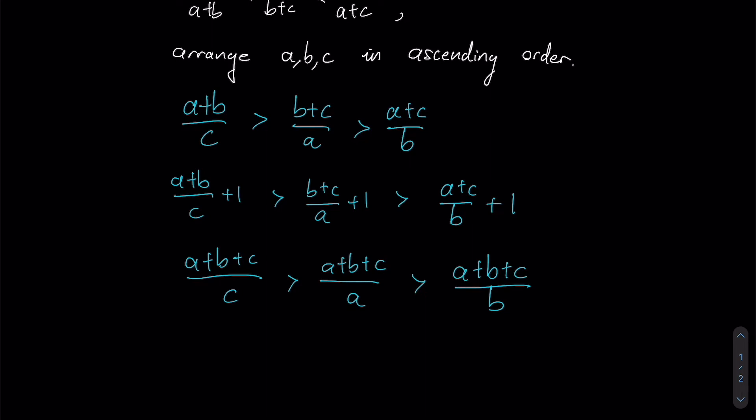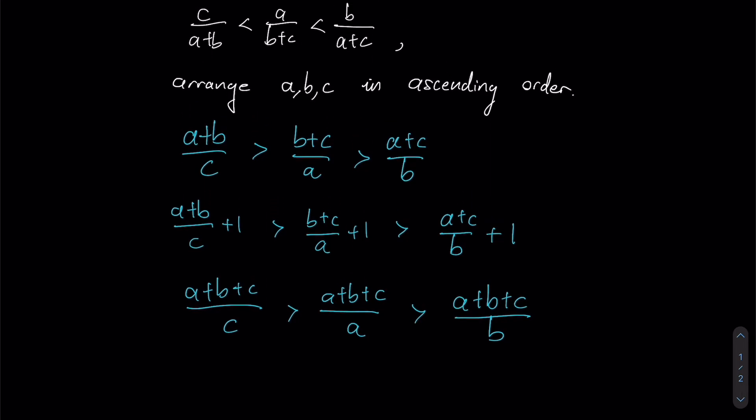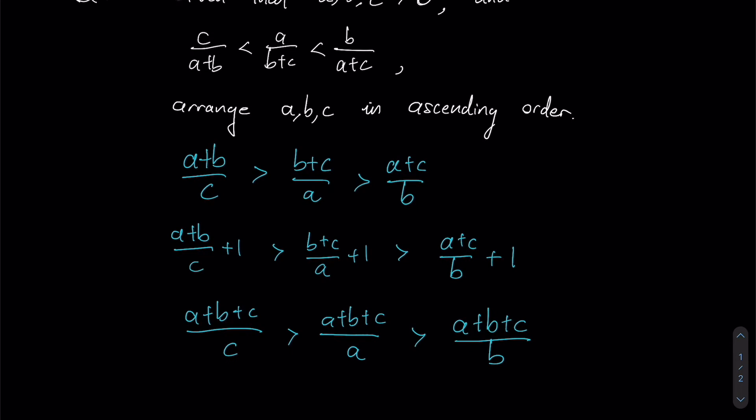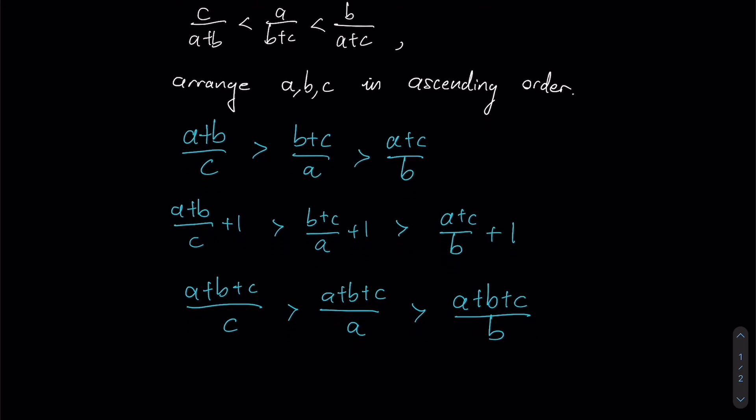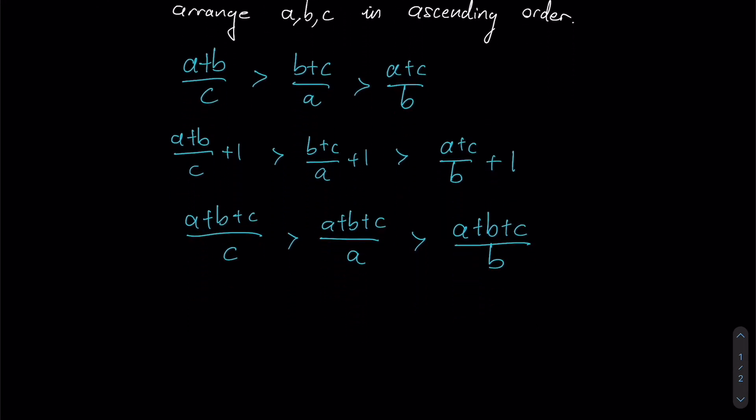Now notice that at this stage all our numerators for all three fractions have now become the same value, which is the sum of a, b, and c. And since all three variables are positive, the sum must definitely be positive as well, which means we could divide by this sum of three variables over here, leaving us with 1 over c greater than 1 over a greater than 1 over b.